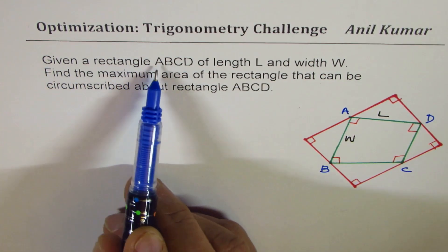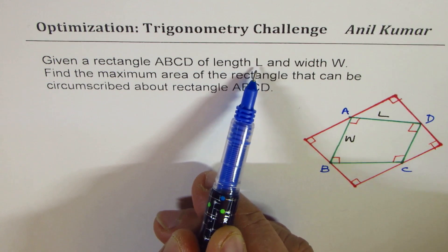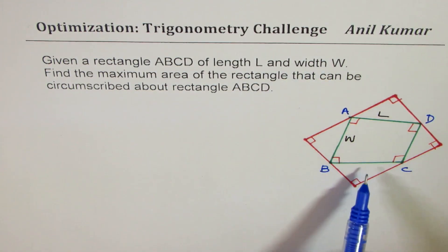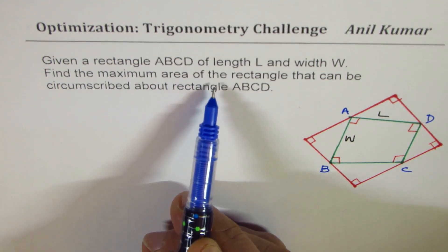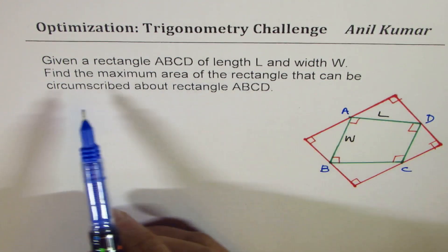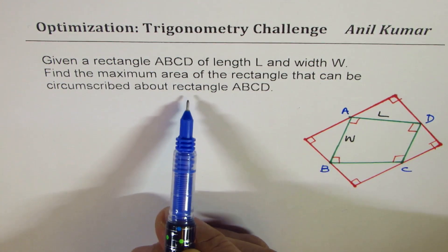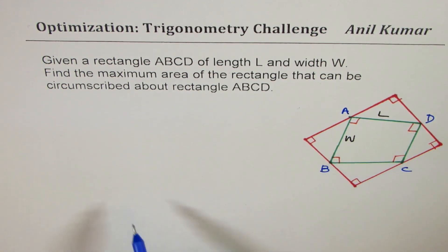Let us say we have this ABCD as our rectangle of length L and width W, which we need to circumscribe with another rectangle, and we want to maximize the area of outside circumscribing rectangle. So I hope the question is clear. It is, given a rectangle ABCD of length L and width W, so it is a general solution, find the maximum area of the rectangle that can be circumscribed over the rectangle ABCD.